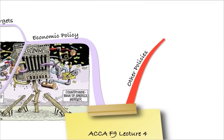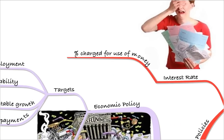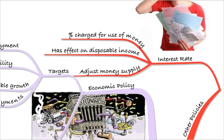Moving on to other policies we need to be aware of: interest rate policy. Interest rates are the percentage charged for the use of money. This will have an effect on disposable income. By increasing interest rates, people will have to spend more on debt servicing — like their mortgage or credit cards — meaning they'll have less to spend in the economy. That's a good way of slowing the economy down. Likewise, in a recession, you can decrease interest rates, put less pressure on households, give them more disposable income, and kick-start the economy again. Effectively, the interest rate adjusts the money supply in the economy.